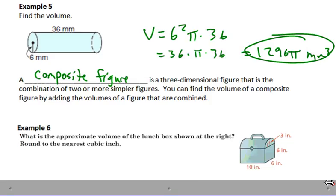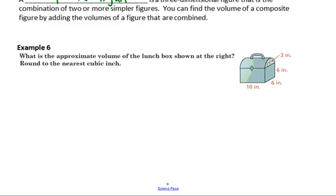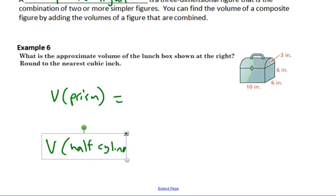Here's an example. I think we're going to cover this next time in class. What is the approximate volume of the lunchbox shown at the right? Round to the nearest cubic inch. I'd like you to try to find that and prepare yourself for next time because it's actually combining two things. It's combining this lower part, which is a rectangular prism, and then the upper part, which is half of a cylinder. So the volume of the prism and the volume of the half cylinder, you can add those two together. That will give you the volume of the whole shape.